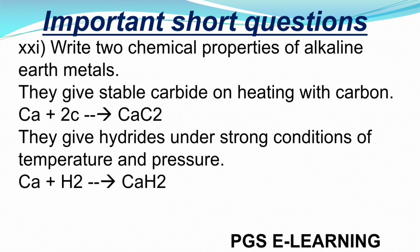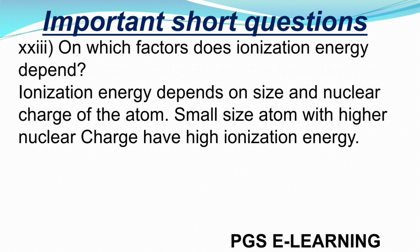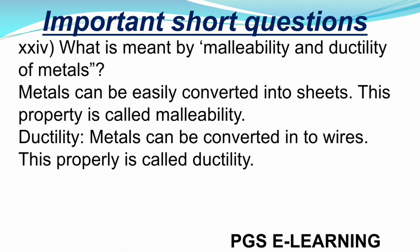Question 21: List two chemical properties of alkaline earth metals. They give stable carbides on heating with carbon; they give hydrides under strong conditions of temperature and pressure. Question 22: Why are silver and gold the least active metals? Because they are not able to lose electrons easily. Question 23: On which factors does ionization energy depend? On the size and nuclear charge of the atom — small atoms with higher nuclear charge have high ionization energy. Question 24: What is meant by malleability and ductility of metals? Metals can be easily converted into sheets — this is called malleability. Metals can be converted into wires — this is called ductility.